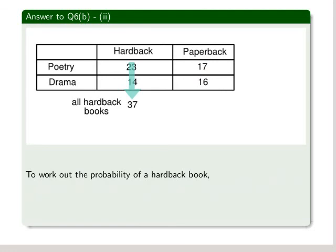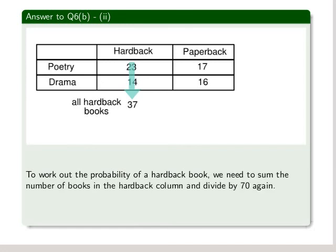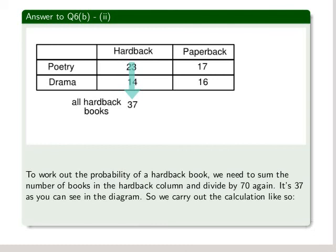Part two now. To work out the probability of a hardback book, we need to divide the sum of the number of books in the hardback column and divide by 70 again. It's 37, as you can see in the diagram. So we carry out the calculation like so: 37 over 70 equals 0.529. So 0.529 is the probability of a hardback book.